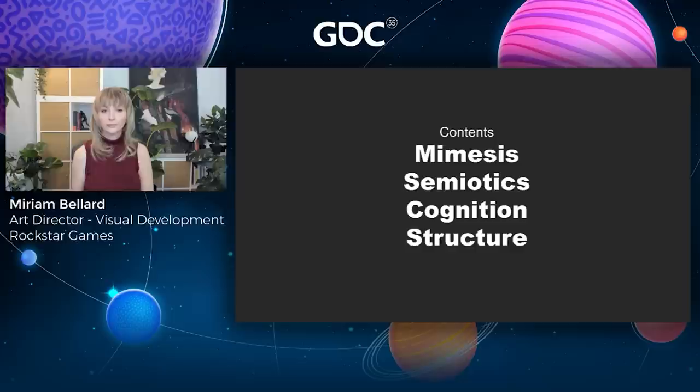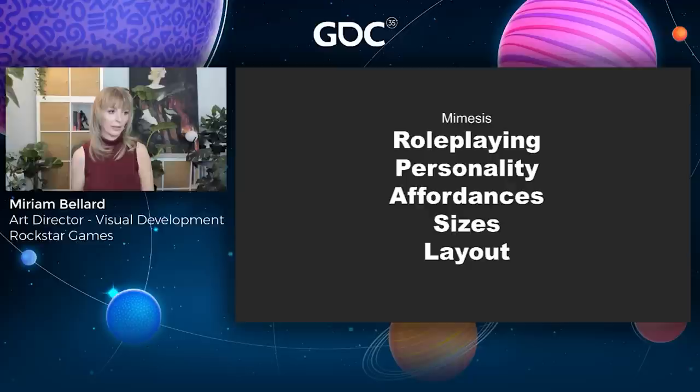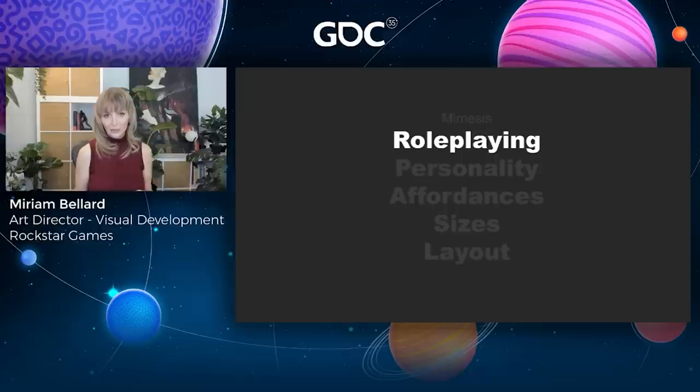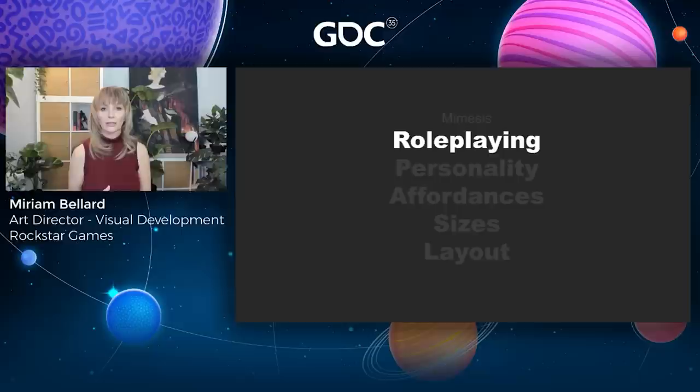Starting now with mimesis — mimicking and copying reality. A good way to start here is with role-playing. When you're engaging with a design, you want to think about: who are the characters that were involved, what resources did they have to hand, what was their taste and interest, what was the fashion at the time, and then who came later — what were their needs, tastes, interests? What environmental factors were in play? You really want to think through all the different layers of history and all the different characters.